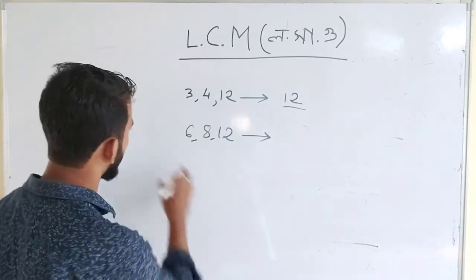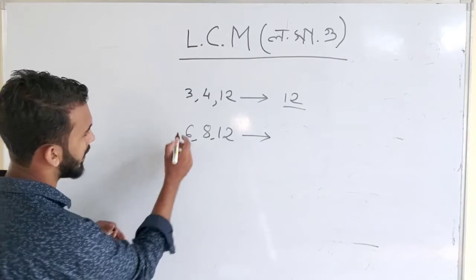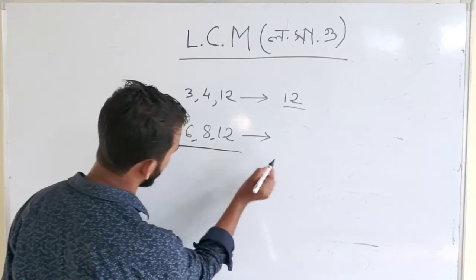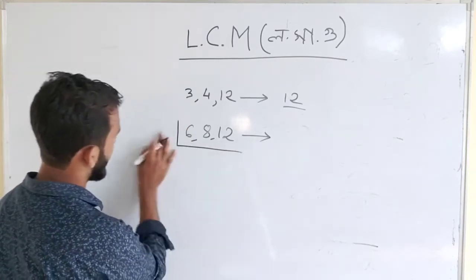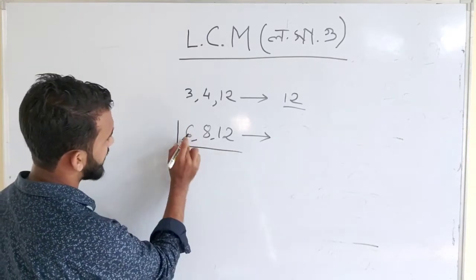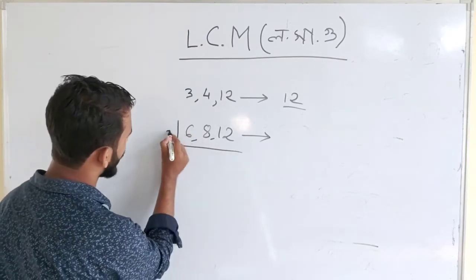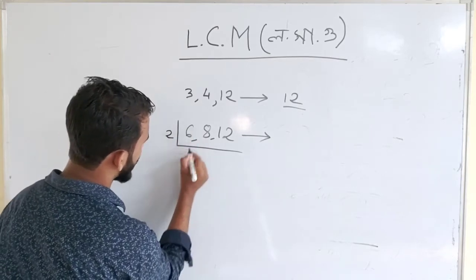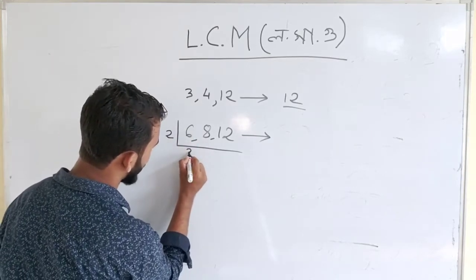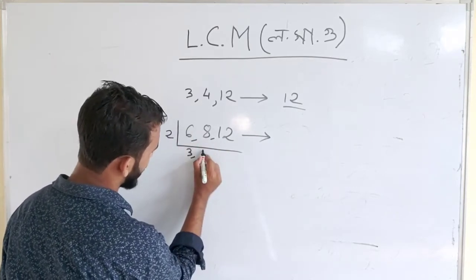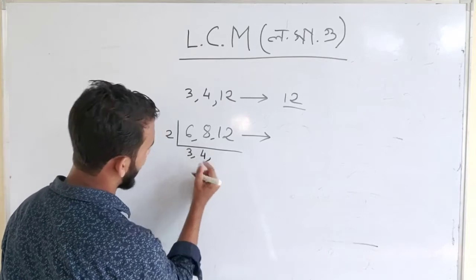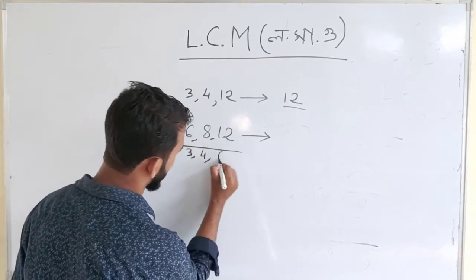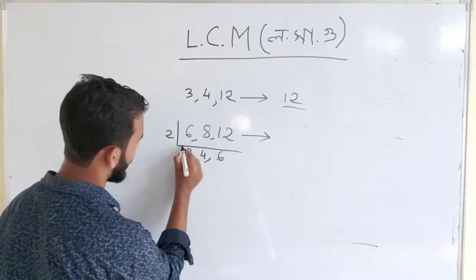We are going to discuss this now — we are going to take action. First, we are going to work with: 2, 6; 2, 8; 2, 12. Breaking these down: 2, 3; 2, 6; 2, 4; 2, 2; 2, 12; 2, 6; 12.